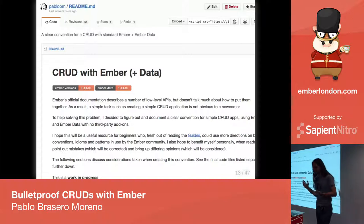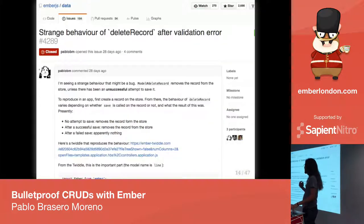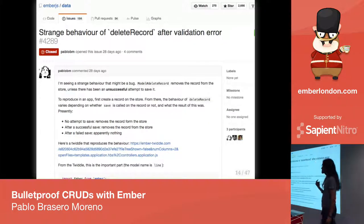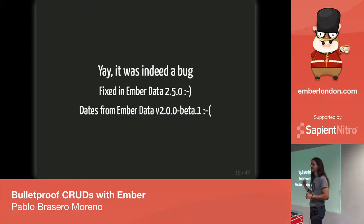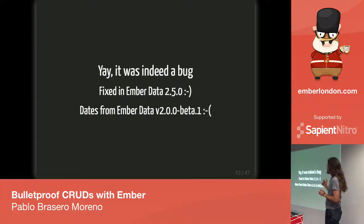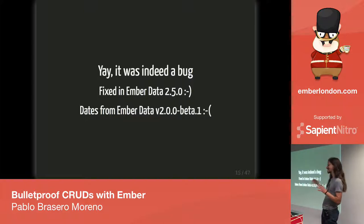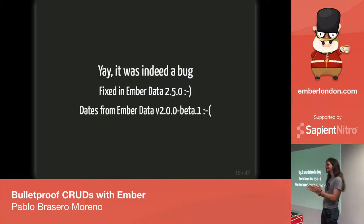Incidentally, the problem I was having with deleteRecord turned out to be a bug. I took the time to isolate it and create an issue on Ember Data's issue tracker, and it was eventually fixed in Ember Data 2.5. But this had been there since Ember Data 2 beta 1 — a space of roughly 8 months. So if you have an application affected by this bug and you do deleteRecord on something that may have a validation error, bear in mind that may not be doing what you think.